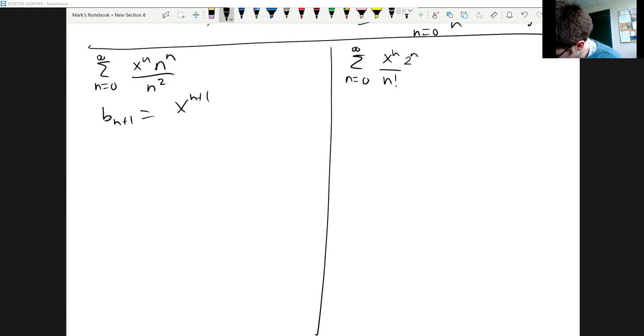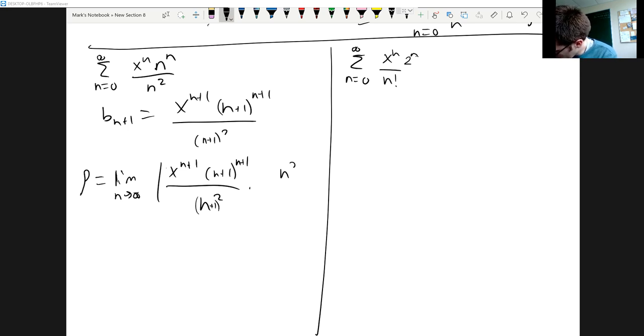bn+1 is x^(n+1) (n+1)^(n+1) all over n squared. And so when we compute our ratio test we'll have the limit as n goes to infinity of the absolute value of x^(n+1) times (n+1)^(n+1) all over n squared times the reciprocal. There should be an (n+1) squared, so it'll be n squared on top, x^n on the bottom, and n^n down there.